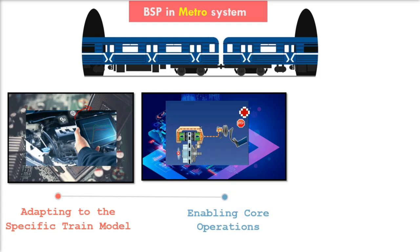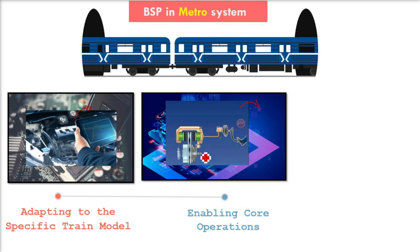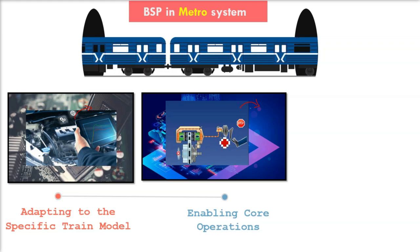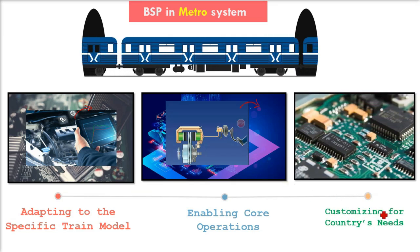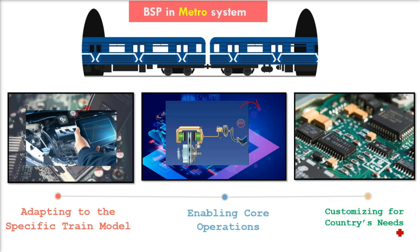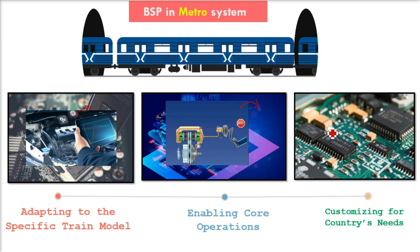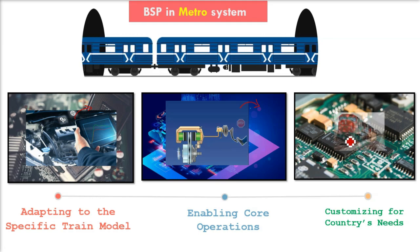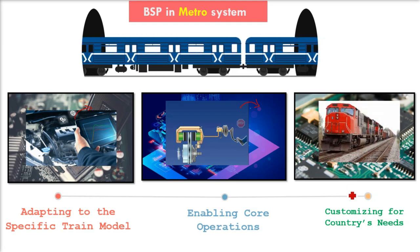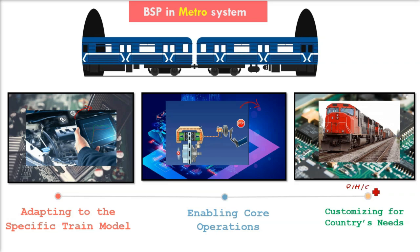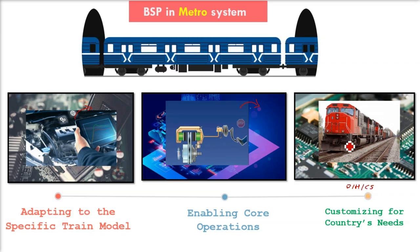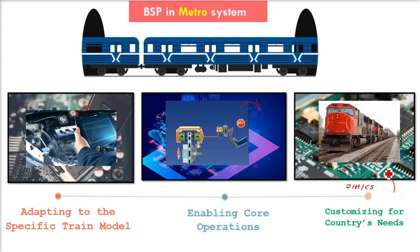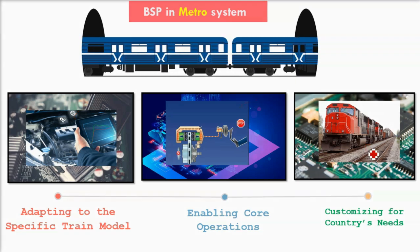The BSP also enables core operations. For example, if the metro control system needs to apply brakes, it sends a command through the BSP, which translates it into the exact instructions that the brake hardware can understand. Additionally, BSPs allow customization for country-specific needs. In some countries, metro trains operate in unique conditions such as dust, heat, and crowded stations. BSPs help optimize the hardware-software connection to handle these specific challenges.